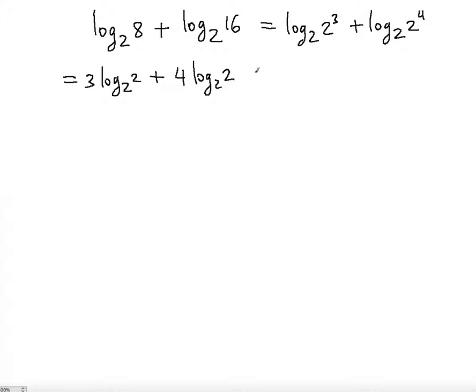So now look what happens. We can combine these two logs and simply add the coefficients 3 and 4, right? Because the log 2 with base 2 are repeated here. So it's going to be simply 3 plus 4 log with base 2.